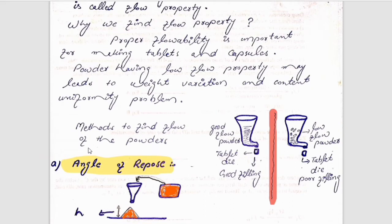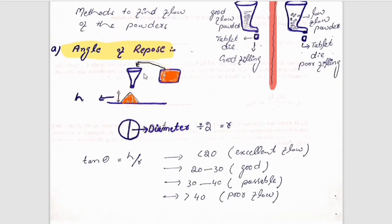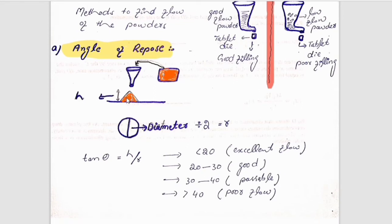The first method to find the flow of powder is the angle of repose. This method is very easy. First, we take the powder — you can see here, this is the powder, this is a funnel, and this is a plane surface. We keep the funnel above some distance from the plane surface and pass the powder through the funnel, so we get a heap of the powder.